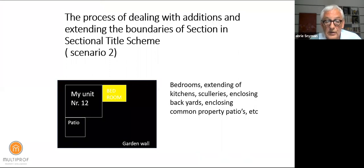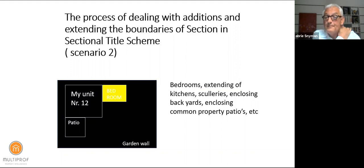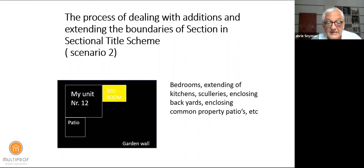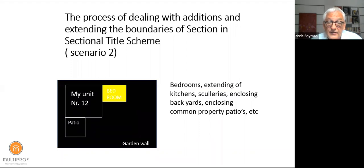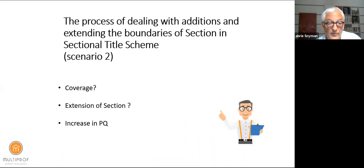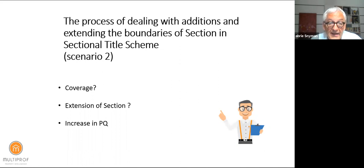The second scenario — adding a bedroom, kitchen scullery, enclosing a backyard, enclosing a patio, and all similar additions — you need to determine again if there is coverage available and whether the area belongs to your section. If not, you are building onto common property and need permission from co-owners. You need to make sure coverage is available, and in that case you need to do the extension of your section, which will increase the participation quota and increase your levy.